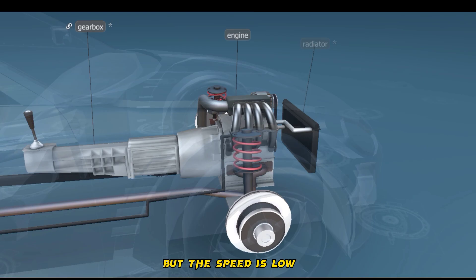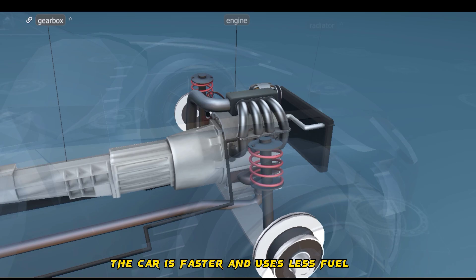In low gear, the output of the engine is high, but the speed is low. In high gear, the car is faster and uses less fuel, but accelerates more slowly.